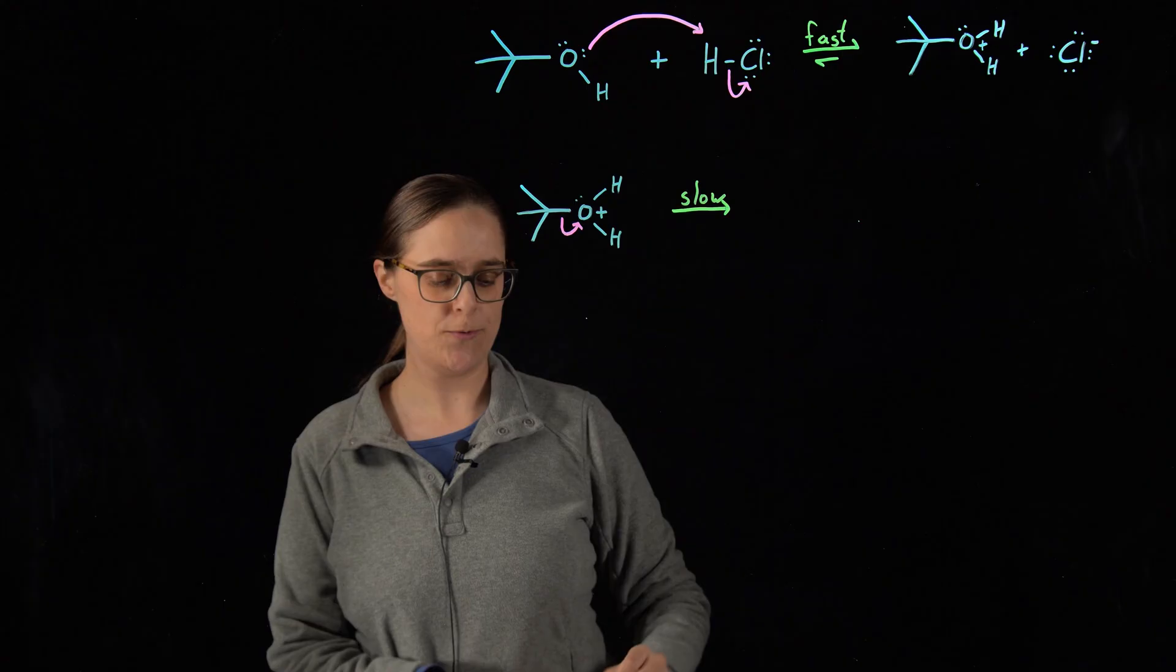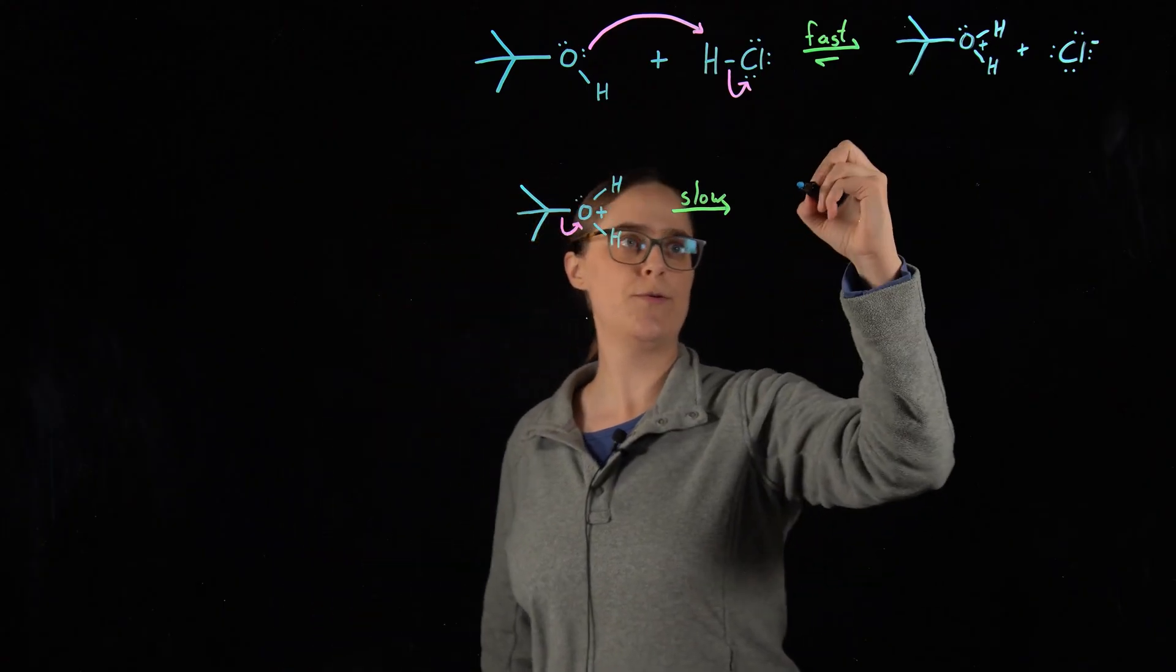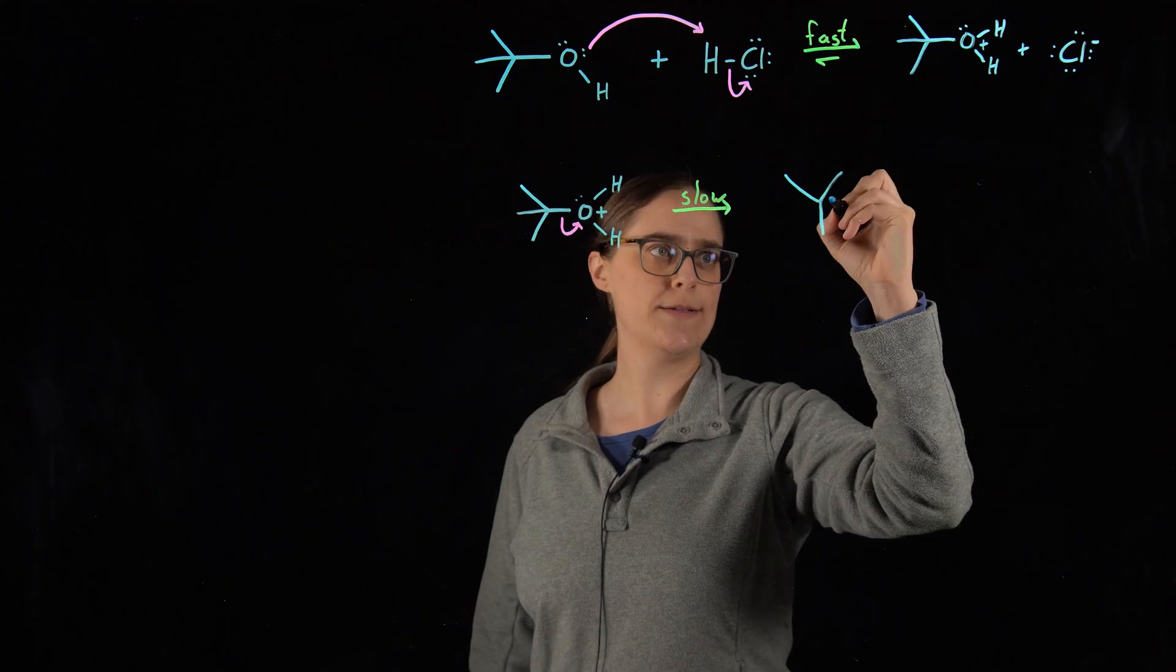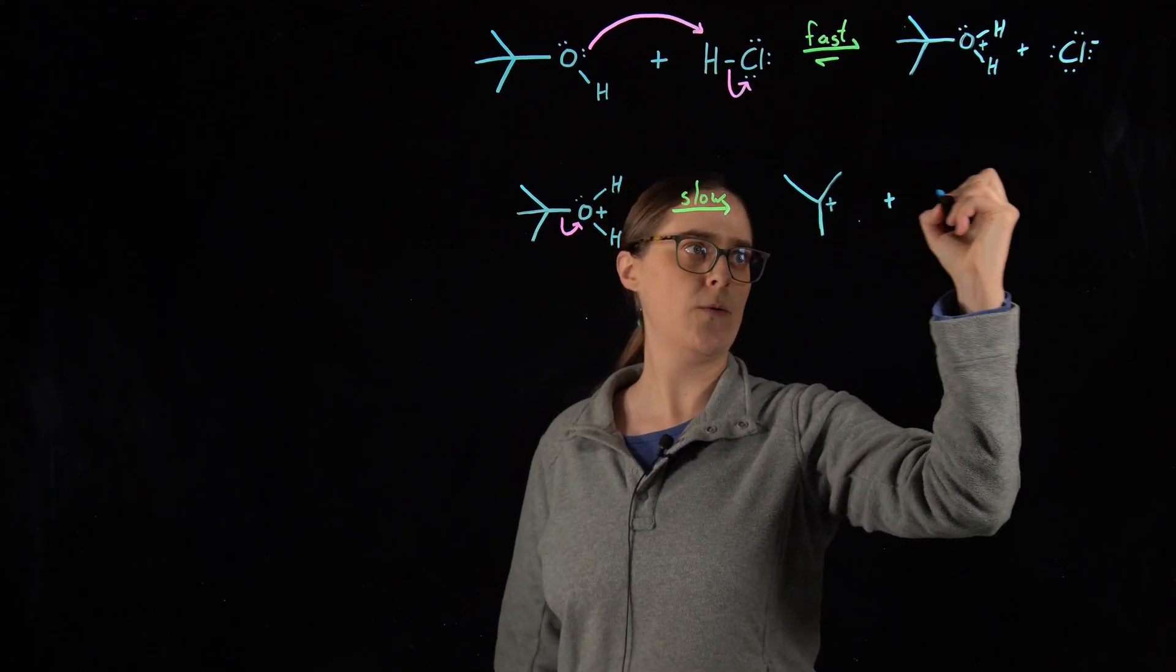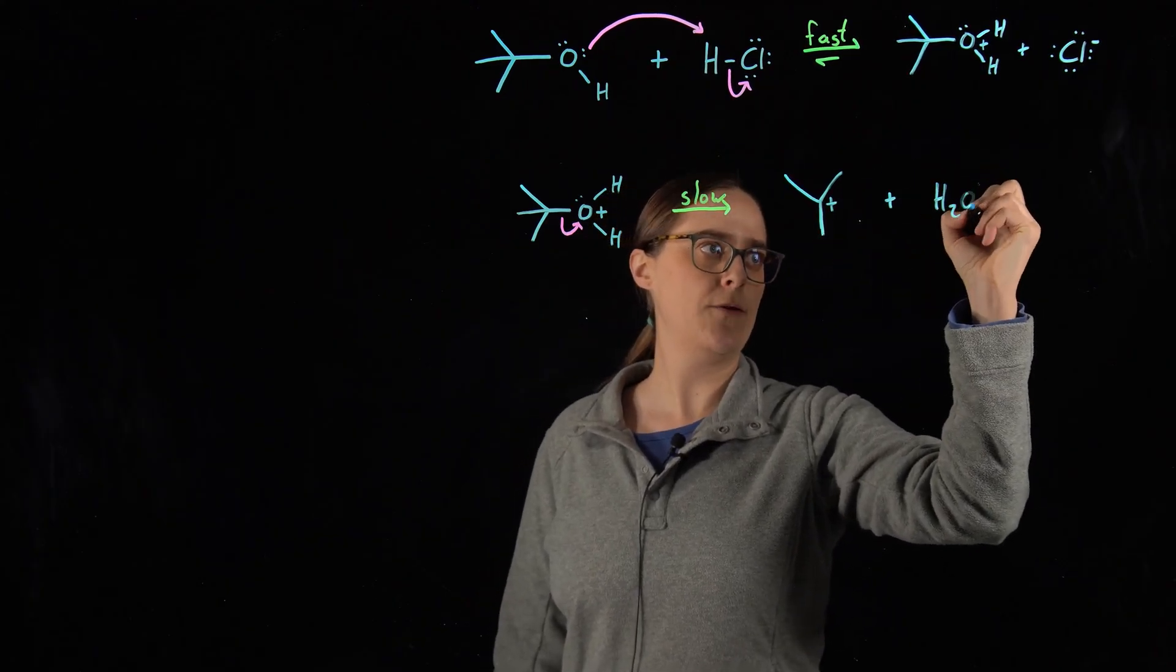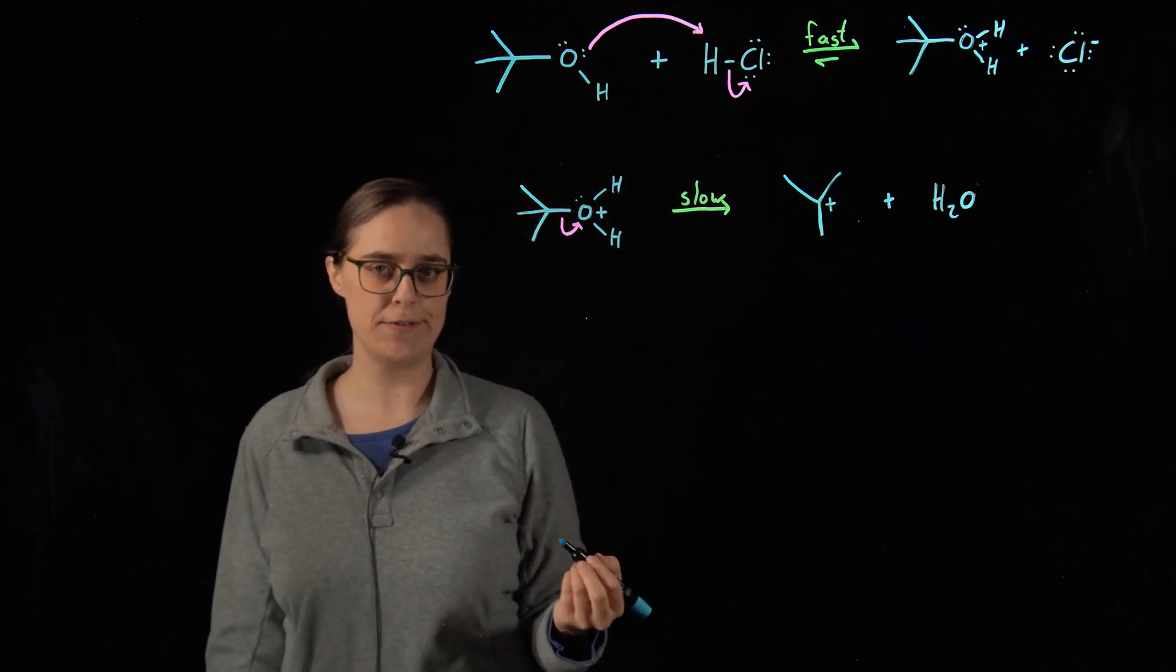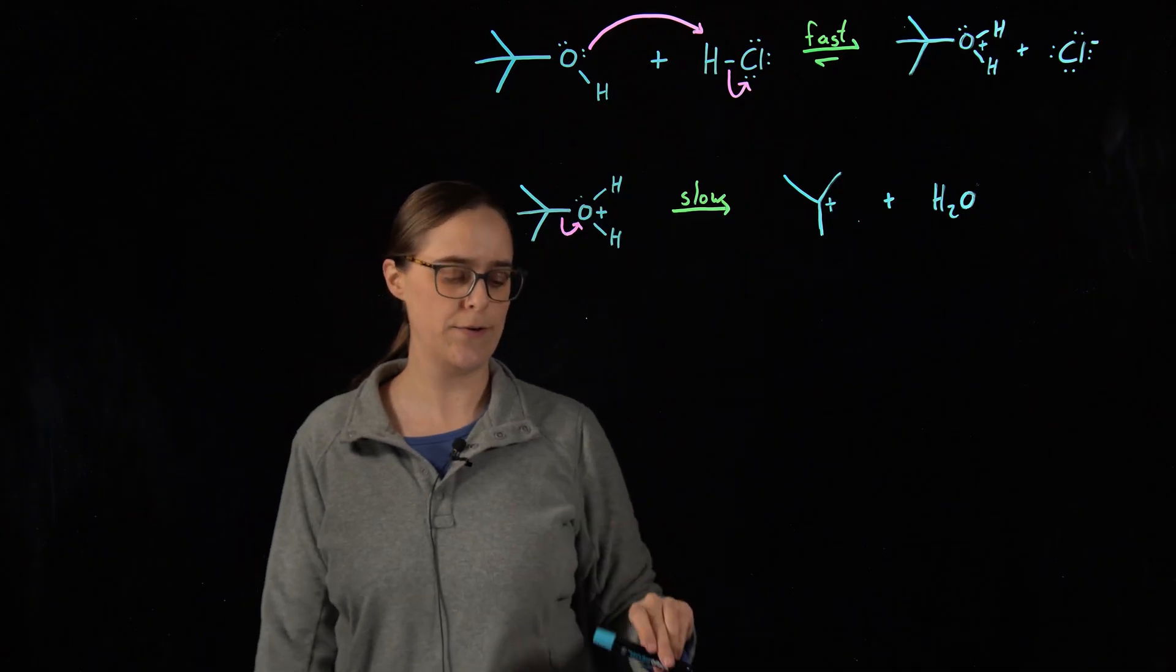So step two, we end up with two different products. We have a carbocation, and we have water. In order for this reaction to actually occur, these intermediate products need to be relatively stable. And here they are.